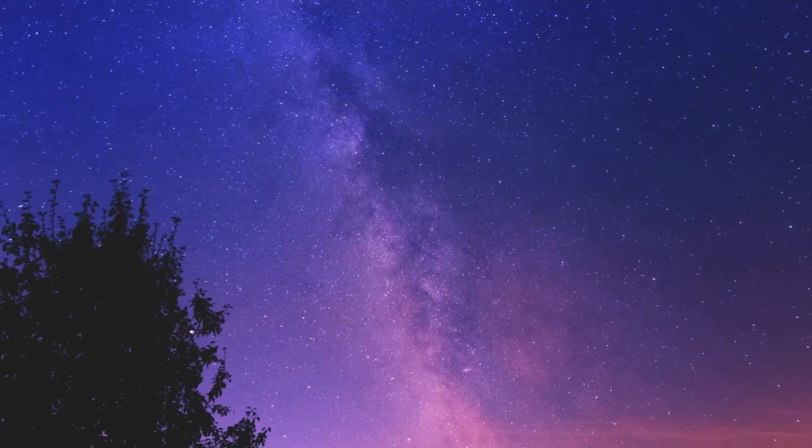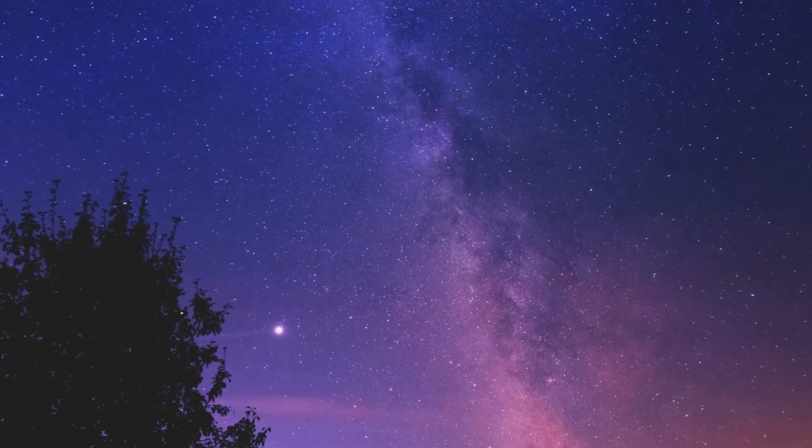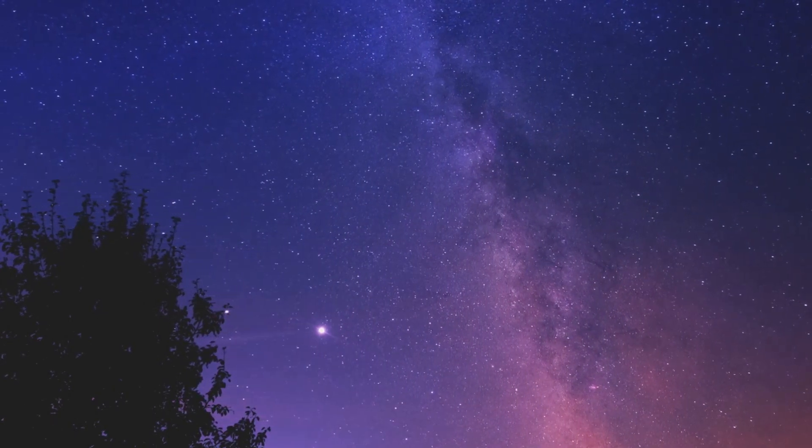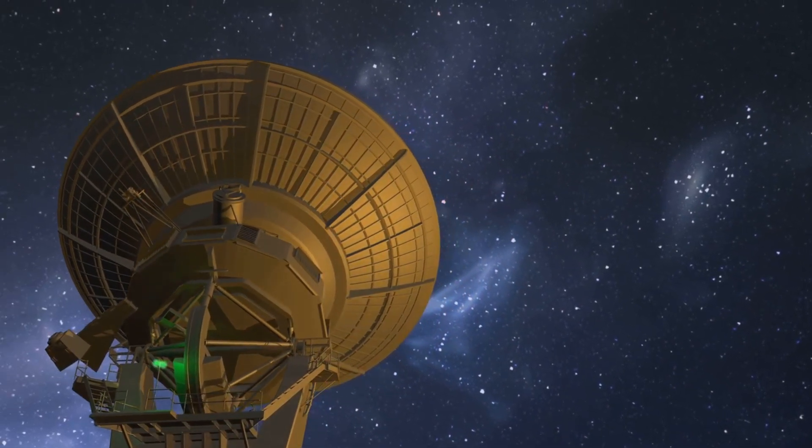So when we gaze into the night sky, we're not just looking far away, we're also looking far back in time. Now let's talk about size. The observable universe is a sphere with you at the center and has a radius of about 46 billion light years. That's the maximum distance from which we could possibly receive light or other signals.